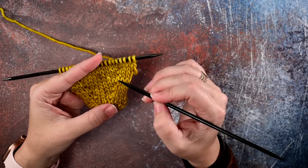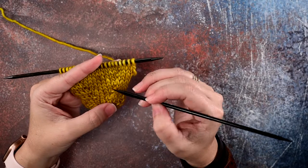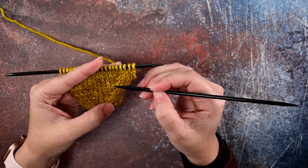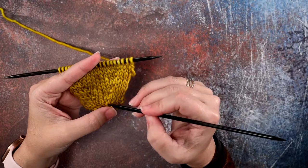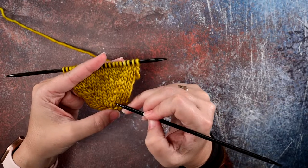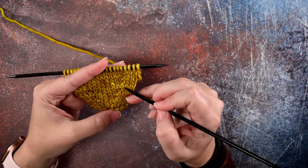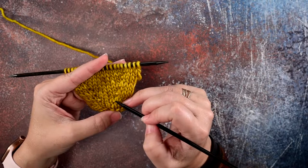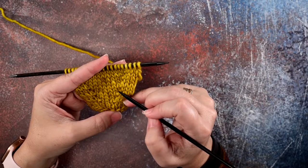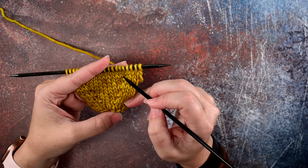What that does is it creates a right lean in your work and creates that increase stitch just to the left of your original stitch. So you can see all of the KFBs here along my fourth stitch of my work, and you can see that they create that increase just to the left of the original stitch.